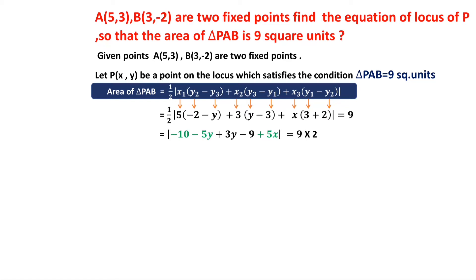Transposing the half to the right-hand side gives 18. Combining like terms: -5y + 3y = -2y and -10 - 9 = -19. So the expression inside the modulus becomes 5x - 2y - 19 = 18. To eliminate the modulus we write 5x - 2y - 19 = ±18.